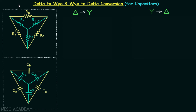In the last two lectures we had discussion on delta to Y and Y to delta conversion for resistors, and now we are going to have discussion on delta to Y and Y to delta conversion for capacitors. First we will revise the formulas which we have derived in the previous two lectures.